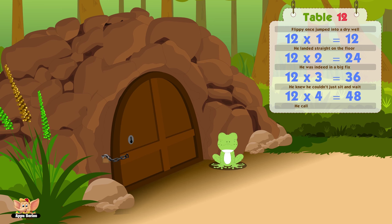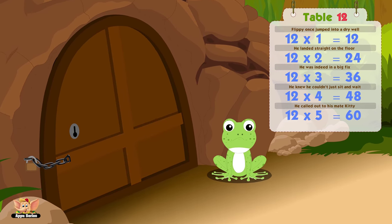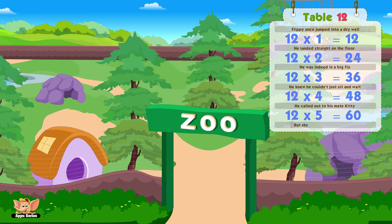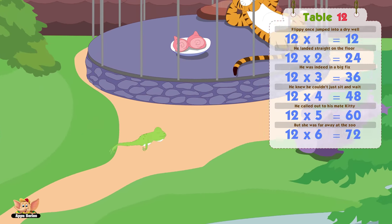He called out to his mate Katie. Twelve fives are sixty. But she was far away at the zoo. Twelve sixes are seventy-two.